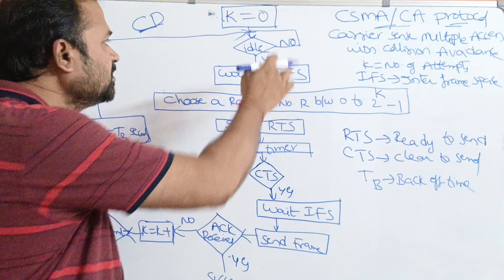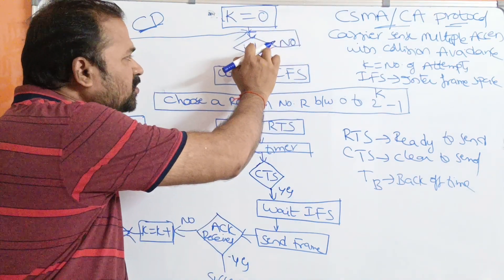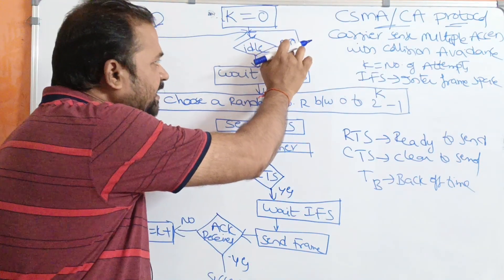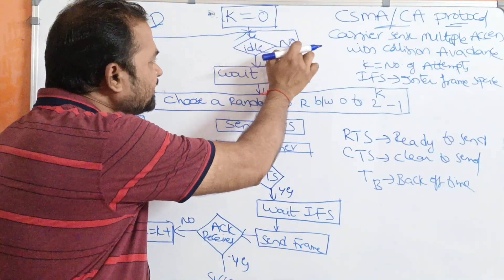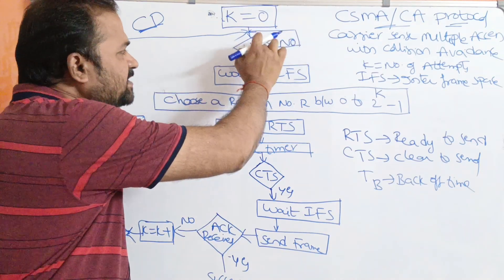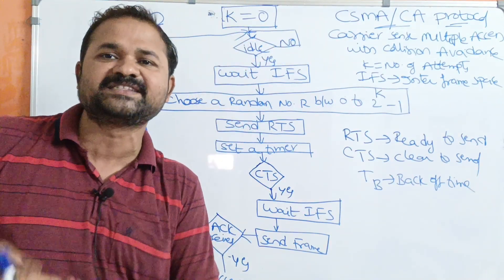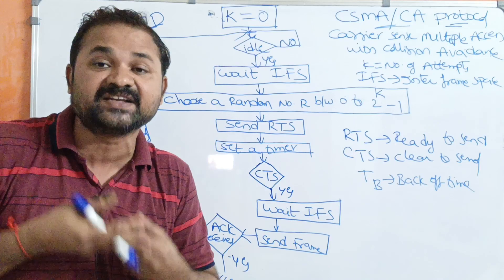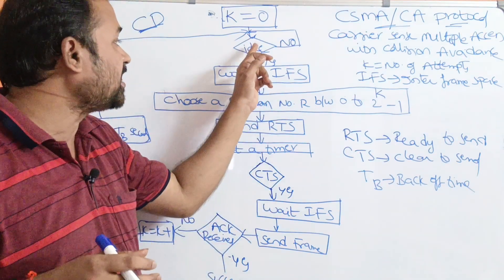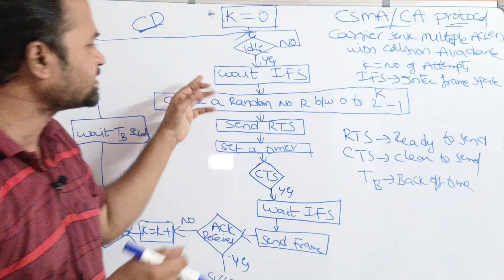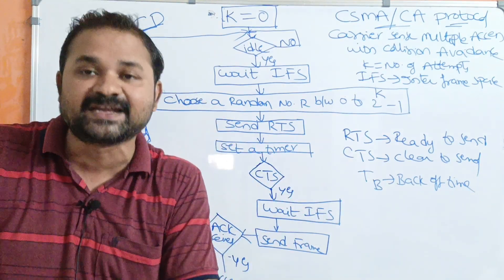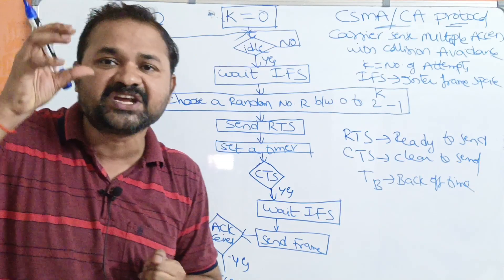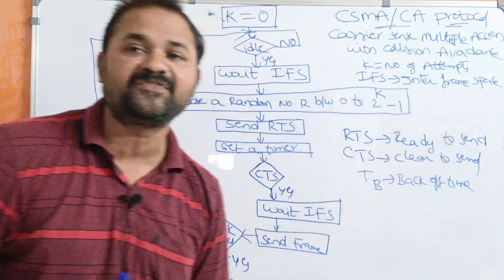If the channel is not idle, that means the channel is busy. If the channel is busy, the station has to sense the carrier again. It loops back and keeps checking until the channel becomes idle. Once the channel is idle, the station does not send data immediately — it waits for IFS, which stands for Interframe Space.